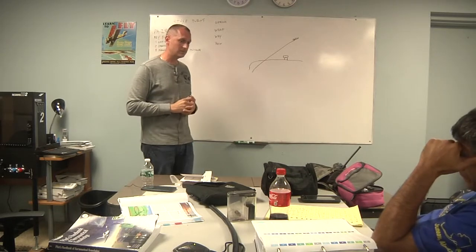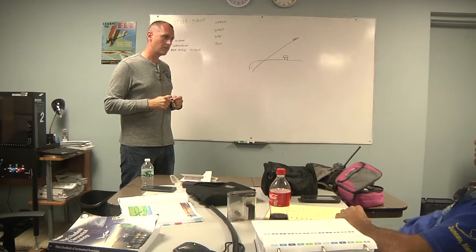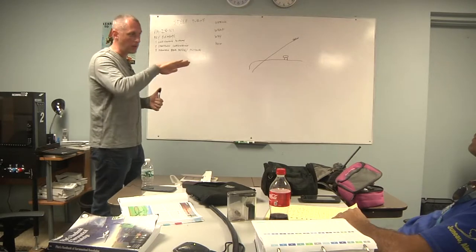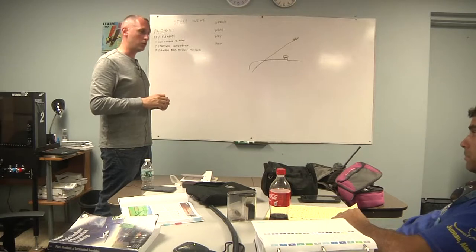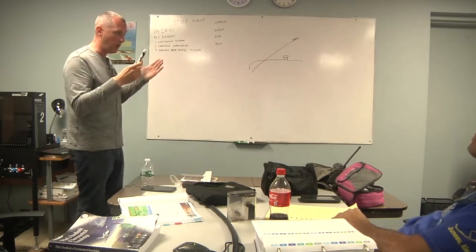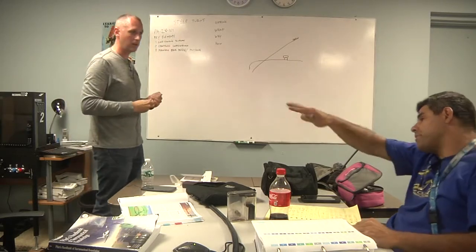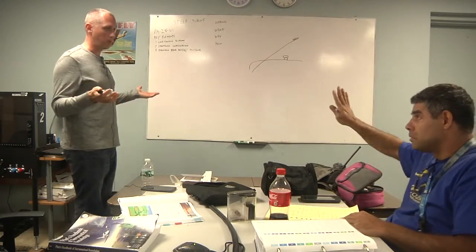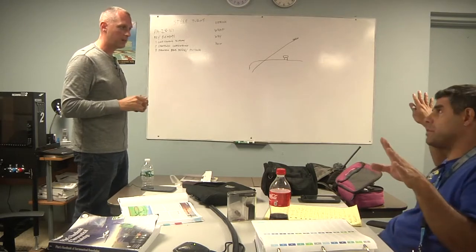Do I need an attitude indicator to do steep turns? You should know what 45 degrees looks like because you're going to look at the nose in reference to the horizon — it's going to be at a 45-degree angle. You should know where the wings are at 45, then back it up by looking at the attitude indicator. If it tumbles or the airplane doesn't have one, it's a visual maneuver of the wings and nose in relation to the horizon. You can do a perfectly good steep turn without an attitude indicator.